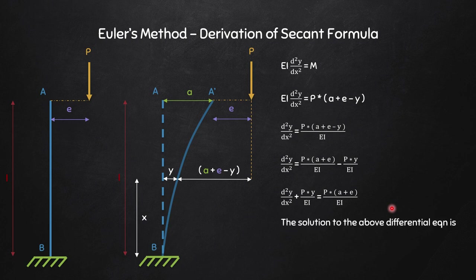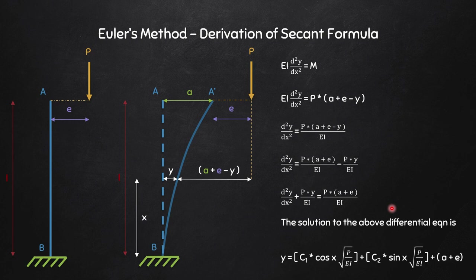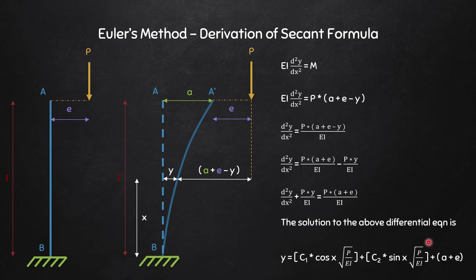The general solution of the differential equation is: Y = C₁·cos(x·√(P/EI)) + C₂·sin(x·√(P/EI)) + (A + E). I recommend reviewing how to solve second-order differential equations to follow this step. Once you know the standard format, you simply substitute the values to obtain this result. This is equation 1 — the general deflection equation.